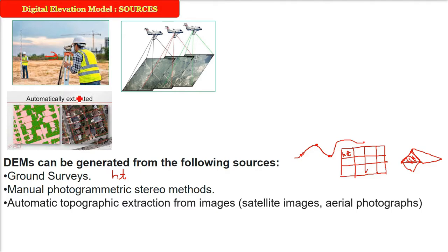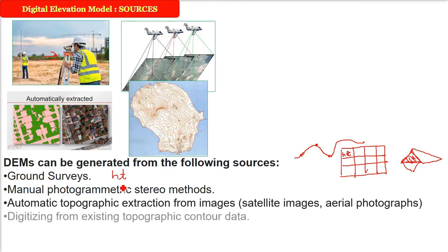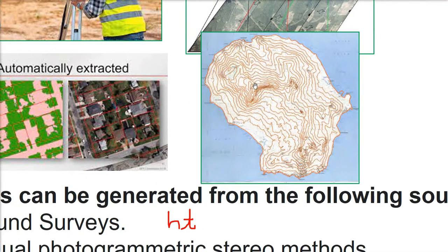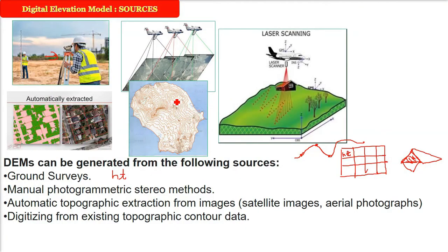The third source is automatic topographic extraction from images — there are methods, technologies, and algorithms that can directly extract topographic data from satellite images and aerial photographs. There is also another way: digitizing from existing topographic control maps. Previously people used to do this manually on a board, but now we have GIS software like ESRI ArcGIS, Quantum GIS, MapInfo, and others, so it can easily be done using a computer.